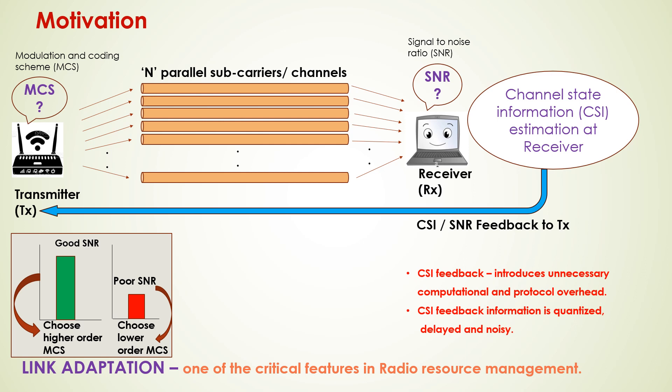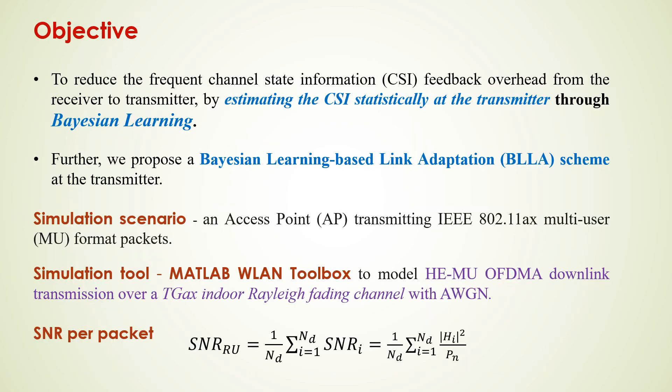These reports can be expensive when generated more frequently, as it introduces unnecessary computational and protocol overhead. Also, the CSI feedback information is quantized, delayed, and noisy. Our objective is to reduce the frequent channel state information feedback overhead from the receiver to the transmitter by estimating the CSI statistically at the transmitter through Bayesian learning.